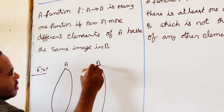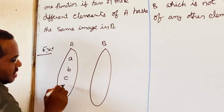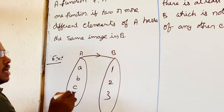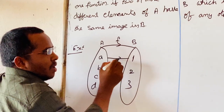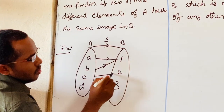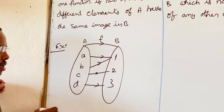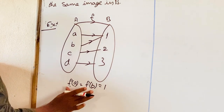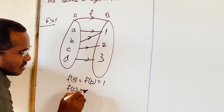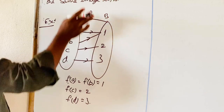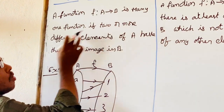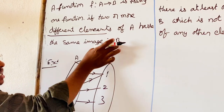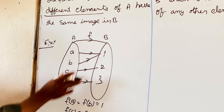Set A has the elements a, b, c, d, and set B has the elements 1, 2, 3. For the function f mapping A to B: a is related to 1 and b is also related to 1. c is related to 2 and d is related to 2. So f(a) = f(b) = 1 — both have image 1. f(c) = 2 and f(d) = 3.